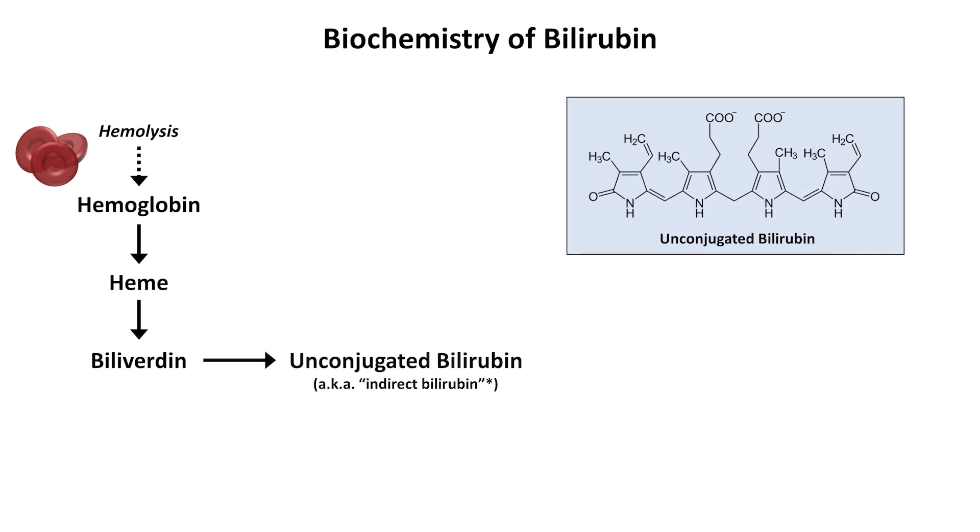As mentioned, the first step in the development of bilirubin is the destruction of red blood cells, a process known as hemolysis, which releases hemoglobin and the heme groups at the center. Heme is first metabolized into something called biliverdin, and from biliverdin into unconjugated bilirubin. Both of these steps usually occur within macrophages of the reticuloendothelial system.